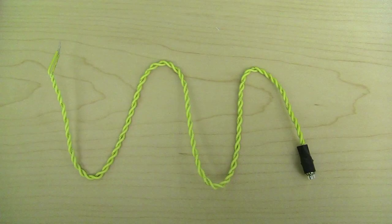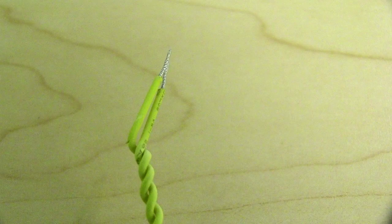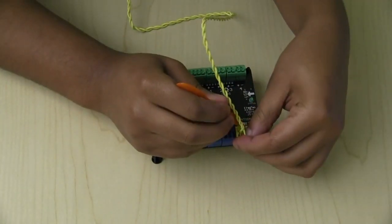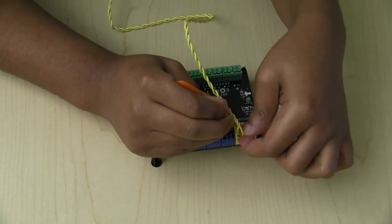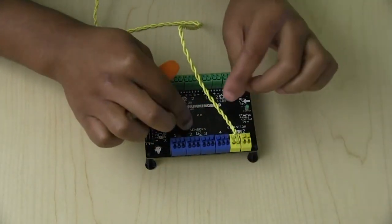To connect a vibration motor to the Hummingbird Duo, connect one of the yellow wires into the plus terminal and the other into the negative. It does not matter which wire is connected where. Just make sure they are connected to the same terminal block.